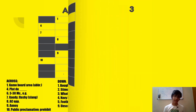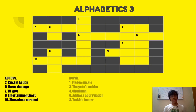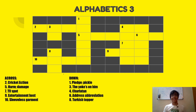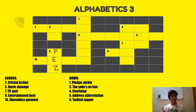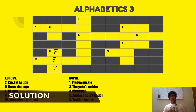Let's get on to Alphabetics Three. Here's the grid — this is the final alphabetic. Pause the video right now and try solving it. Now I'll give you a hint: eight down is pretty confusing. Turkish topper is FEZ — F-E-Z. Now pause the video again, eliminate, and solve. This one is pretty easy.